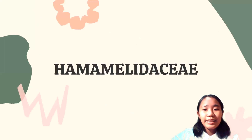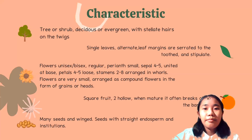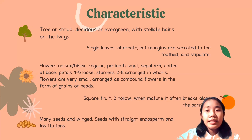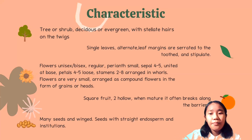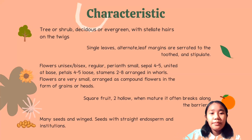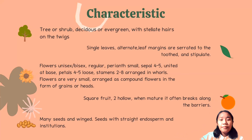The first family is Hamamelidaceae. The characteristics of this family: tree or shrub, deciduous or evergreen, with stellate hair on the twigs. Single leaf, alternate, leaf margins are serrated to toothed and stipulate. Flowers are unisex or bisexual, regular, very small, sepal 4 to 5, united at base, petal 4 to 5, loose.